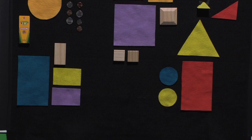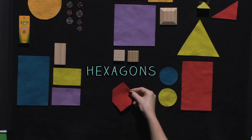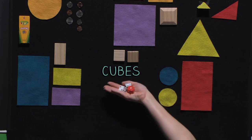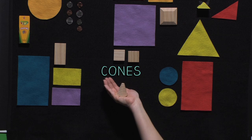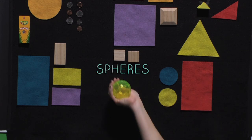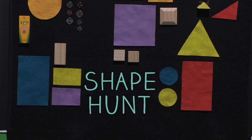In kindergarten, your child will also look for hexagons, cubes, cones, cylinders, and spheres when you go on a shape hunt.